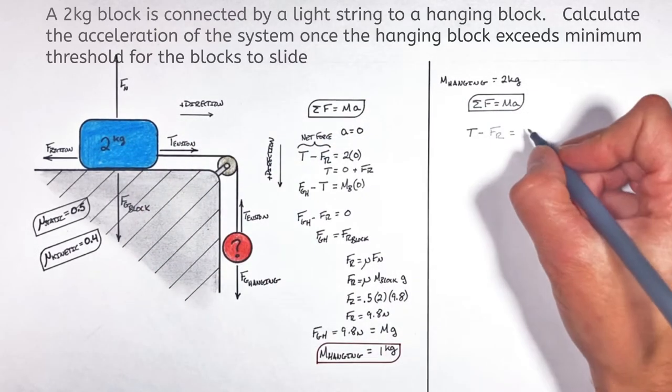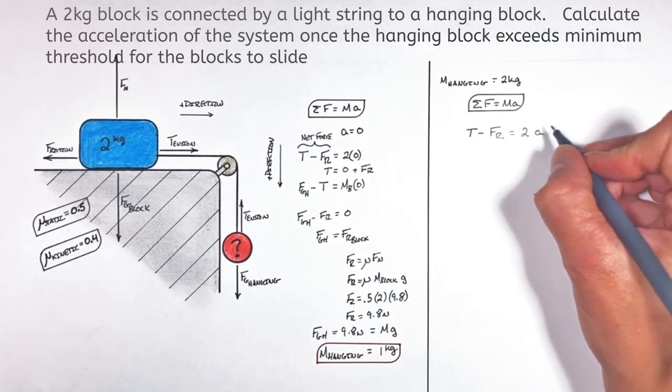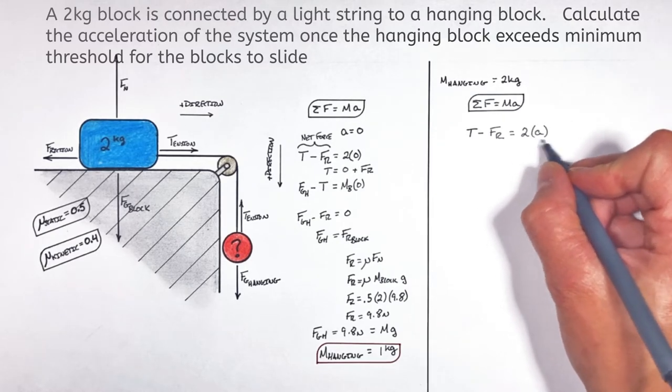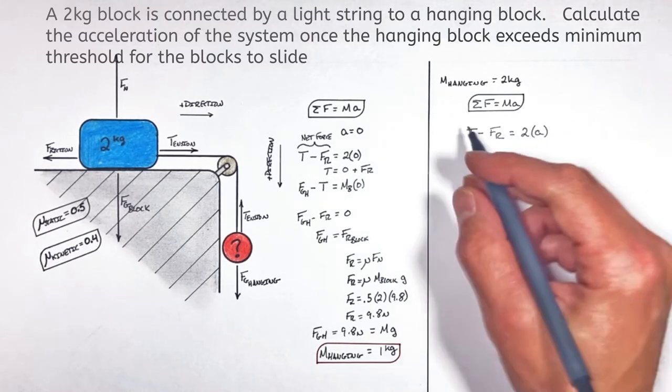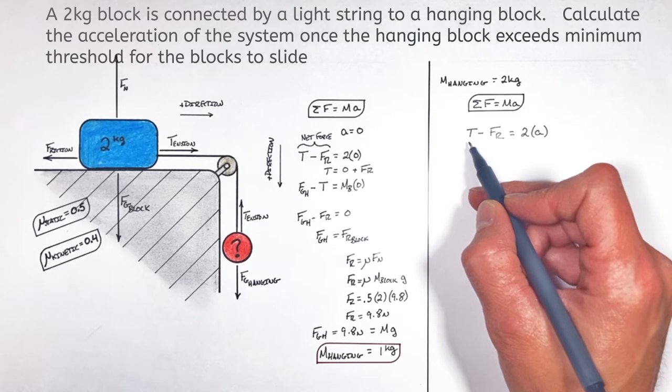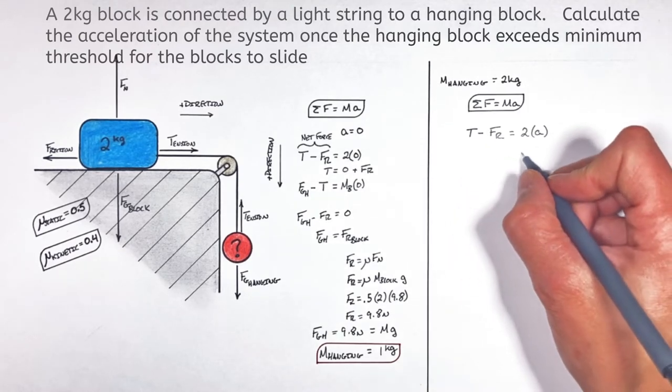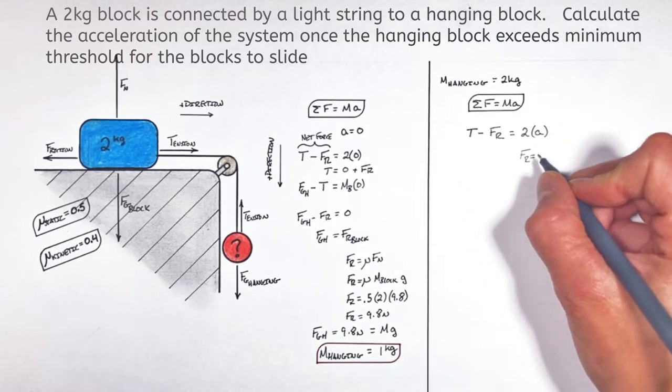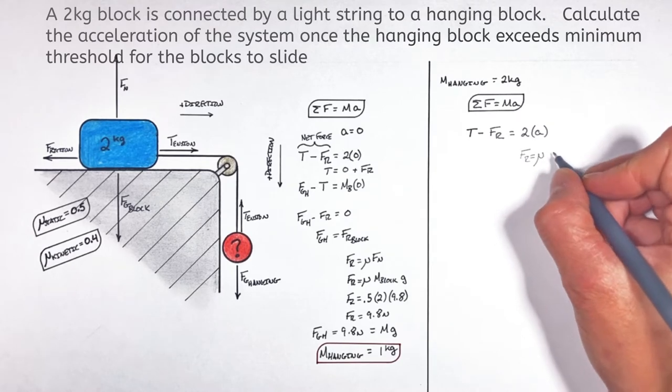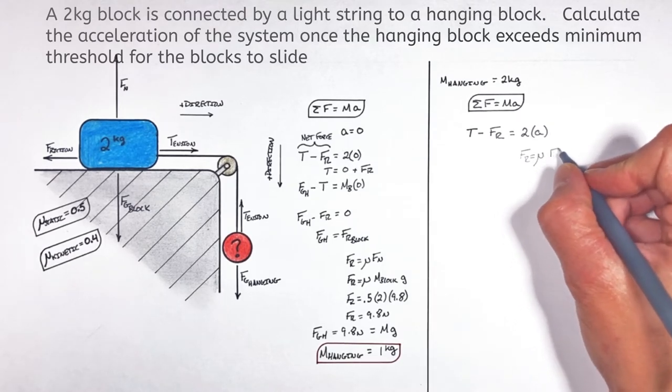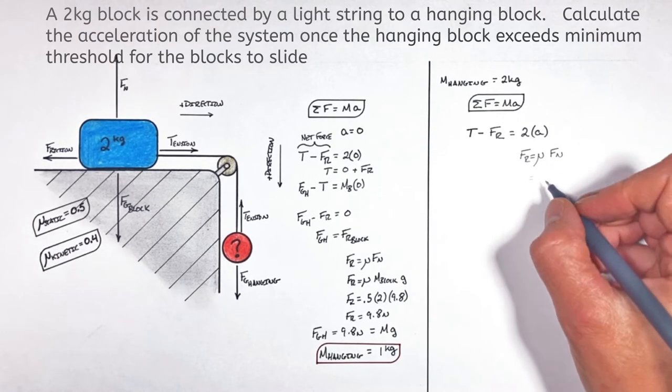Now that's going to cause this two kilogram block to accelerate at some unknown rate a. It's that a we're trying to solve for. Now we don't know how large the tension force is, but there's quite a bit we know about friction. You see, friction is given by mu, the coefficient of friction, multiplied by the normal force.